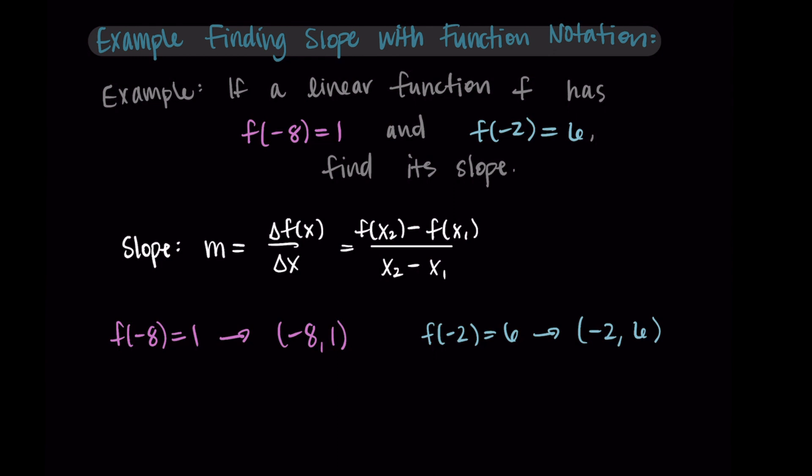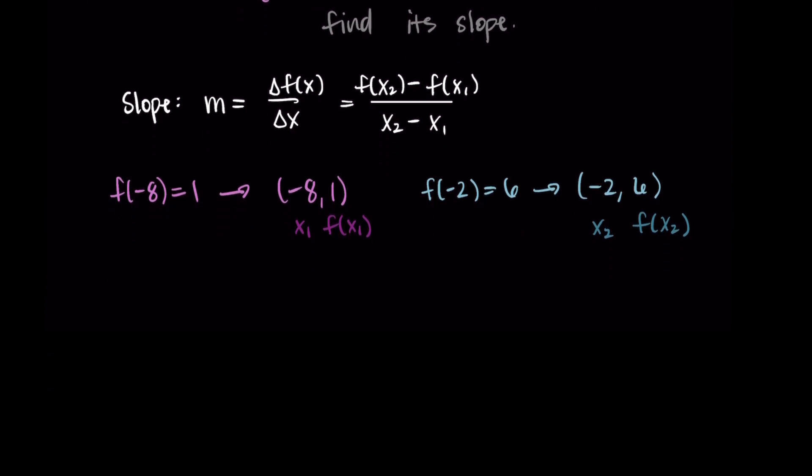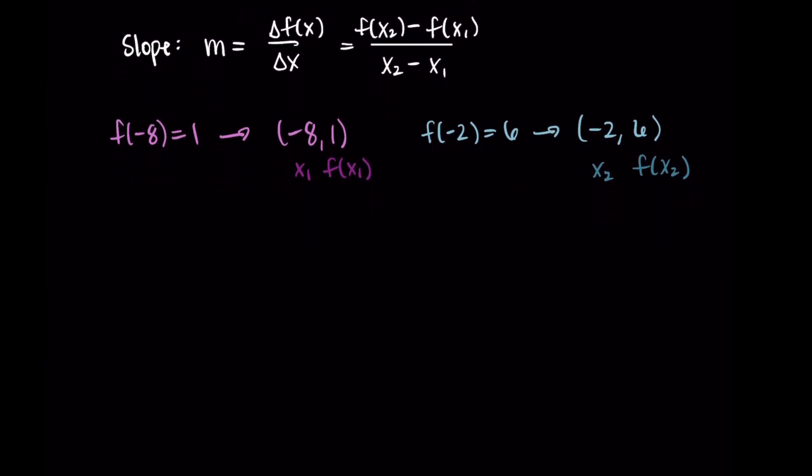Okay, now we have our two points and we just want to find the slope between them. So I'm going to label these as x₁, f(x₁), where that's -8 and 1. And then x₂, f(x₂) is going to be our -2, 6. Then we can put them in our formula. So we're doing f(x₂) - f(x₁), which is 6 - 1. So I'm just taking that information that I labeled and putting it in the formula. And then I would divide it by the change in x. So I do -2 minus a -8.